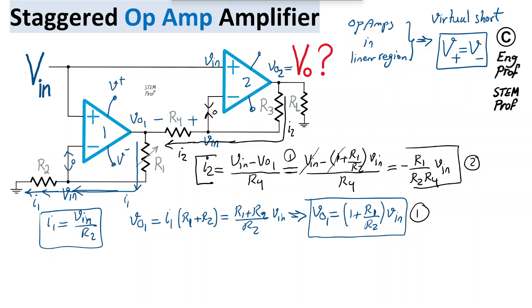So this I2 has to flow to R3 as well, and as a result, the Vout 2 is simply...